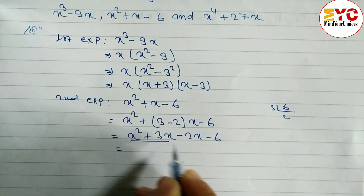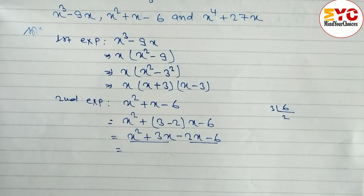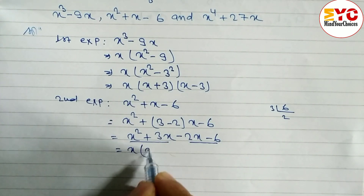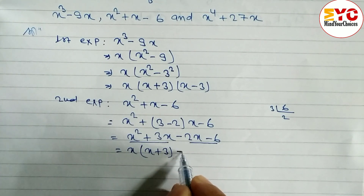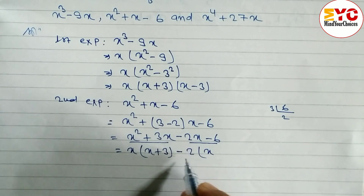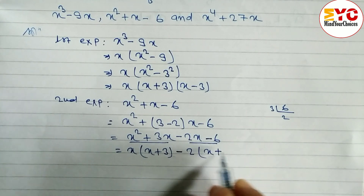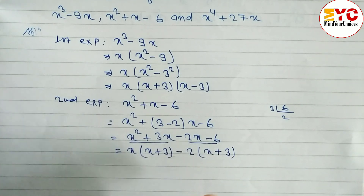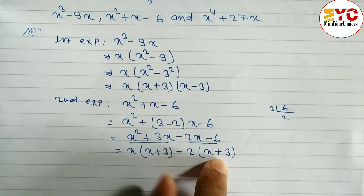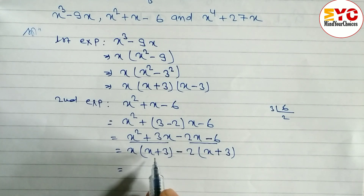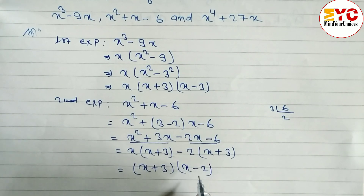Now from the first two terms we take x common, giving x times x plus three. From the last two terms we take minus two common — when minus is common we change the sign — giving minus two times x plus three. Now x plus three and x plus three are the same, so we take x plus three common and the remaining is x minus two.